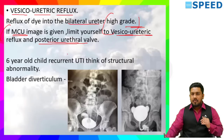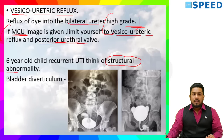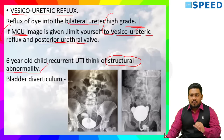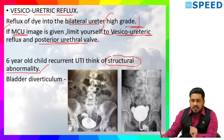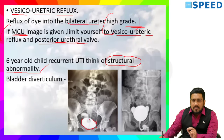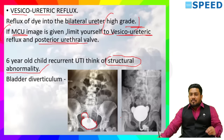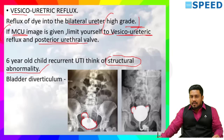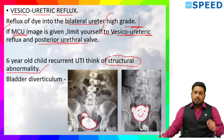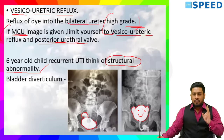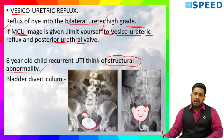Bladder diverticulum: this is an X-ray image with a special study performed. This is the urinary bladder, and here there is an outpouching from the urinary bladder, which is the bladder diverticulum — right-sided. But if the diverticulum is present on both sides, it gives rise to a typical appearance called Mickey Mouse urinary bladder. Mickey Mouse urinary bladder is seen in bilateral urinary bladder diverticulum.